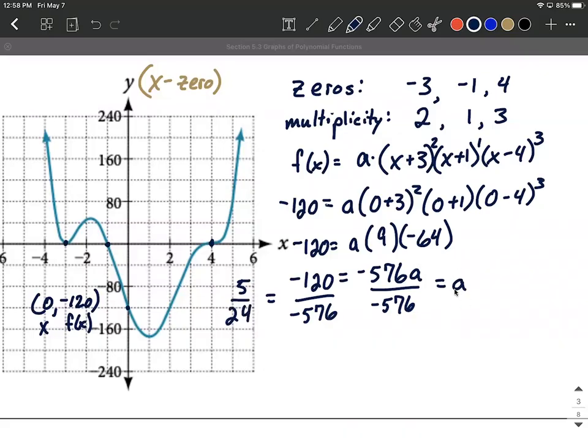Okay, so now we have a value for a. What we're going to do is take this back up to our original and plug it in for that a. So our final answer here, we can say f of x is going to be our value for a, 5/24, multiplied by...